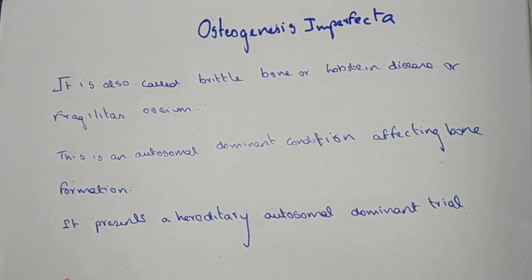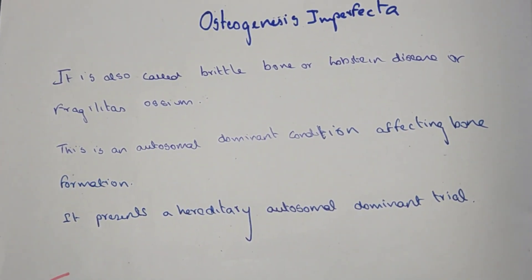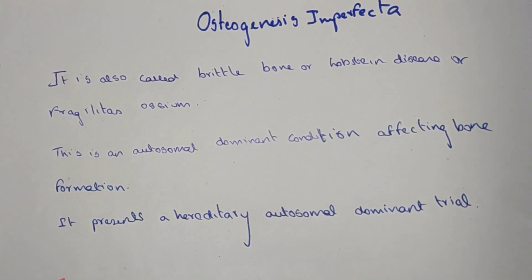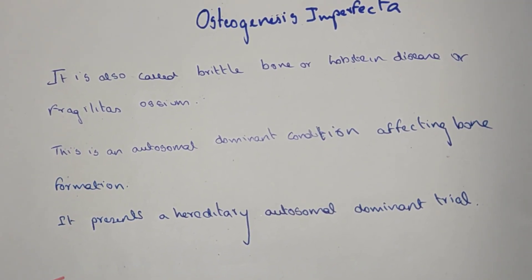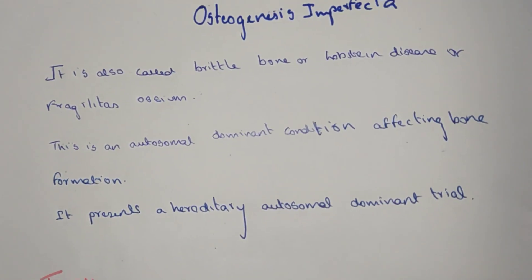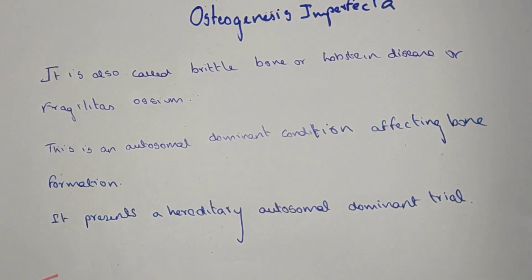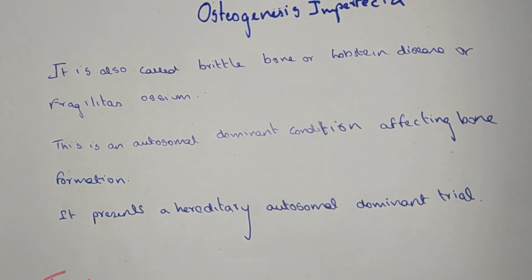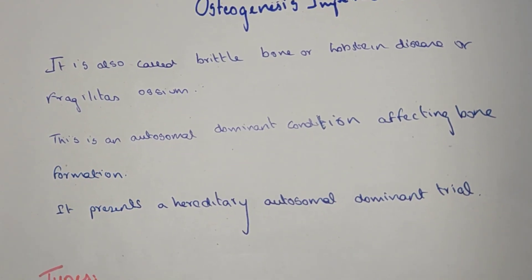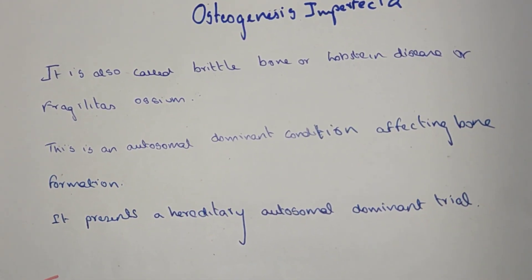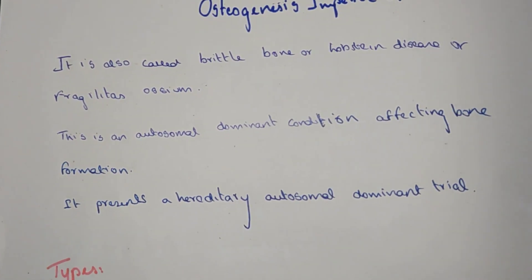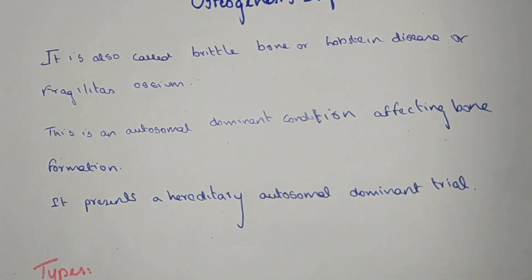Welcome to the Medicine Out YouTube channel. In this video we will talk about osteogenesis imperfecta in Tamil. It is also known as brittle bone disease, lobster disease, or fragilitas osseum. Osteogenesis imperfecta is an autosomal dominant condition affecting bone formation.